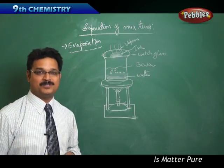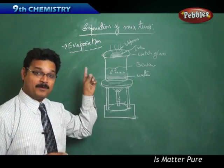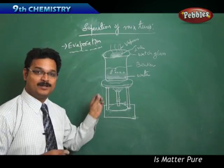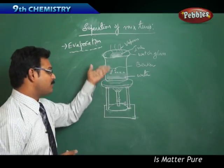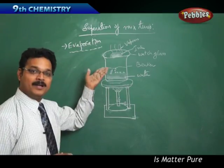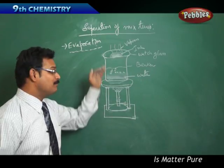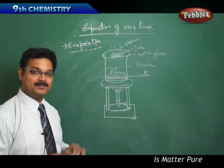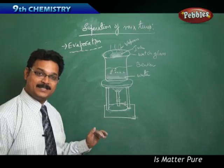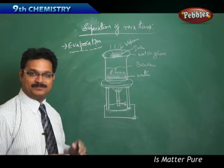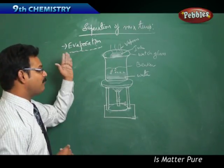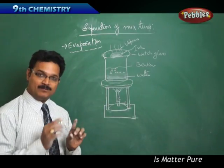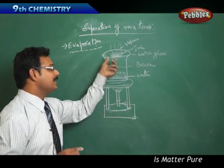There is a small difference between evaporation and vaporization. Vaporization happens at 100 degrees centigrade, which is the boiling point of water. If the process happens at all temperatures — or below 100 degrees centigrade — we call it evaporation. So using the evaporation method, we separated dye and water in ink.